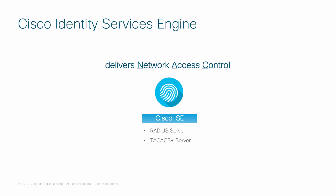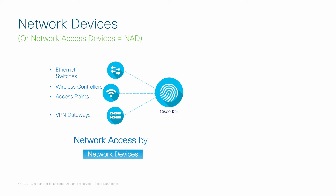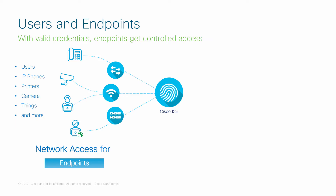ICE is a network access control and policy enforcement platform. But who provides network access to us? It's the network devices. These are the three main avenues for us to get on to the network: wired, wireless, and VPN connection. Who needs network access? It's the users and the endpoints — they want to connect to the network to access various services.